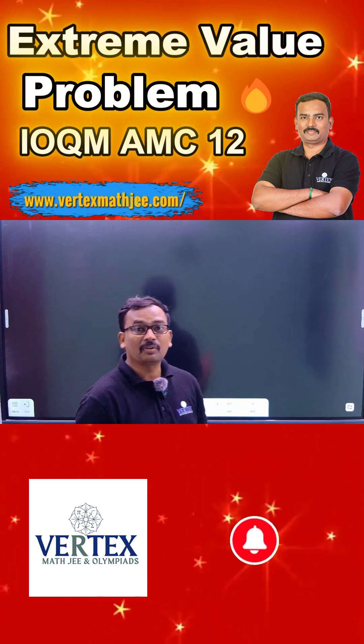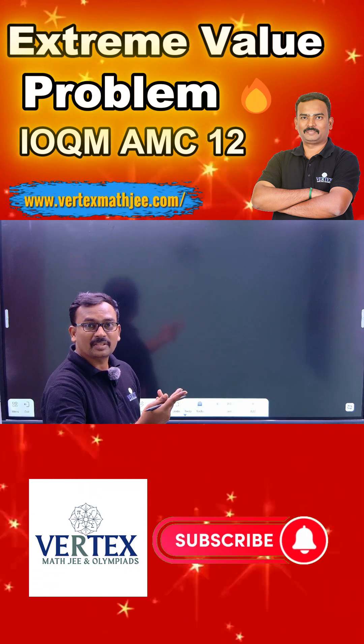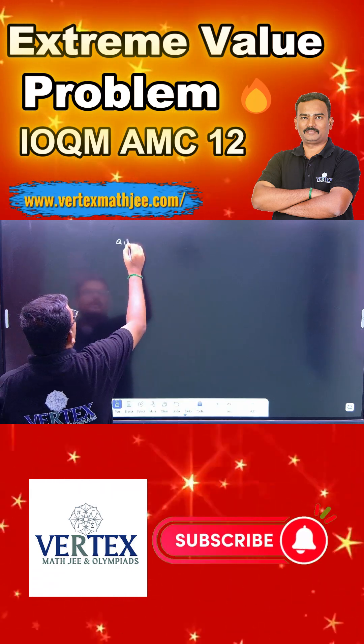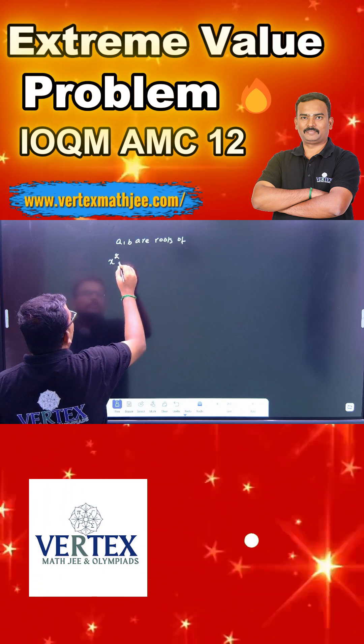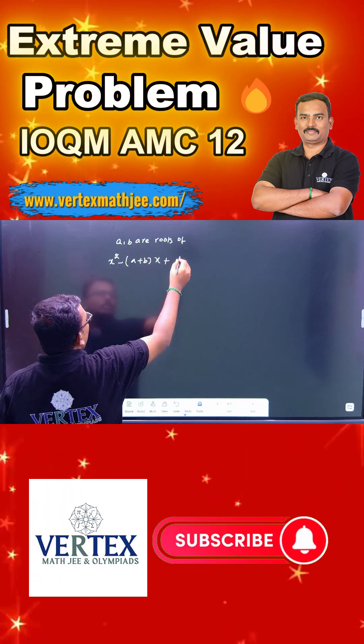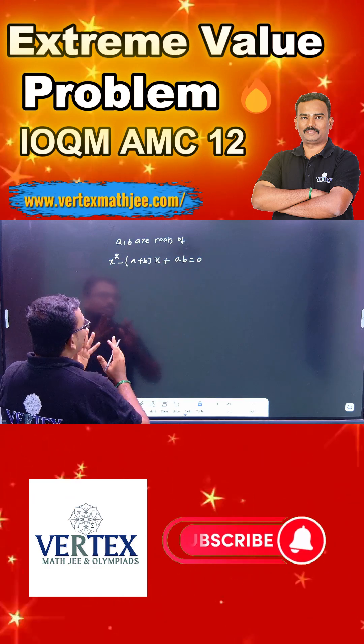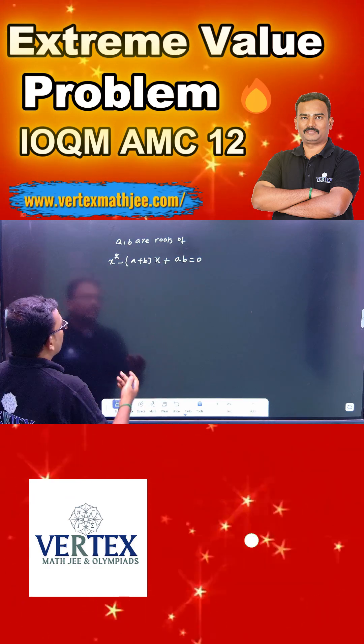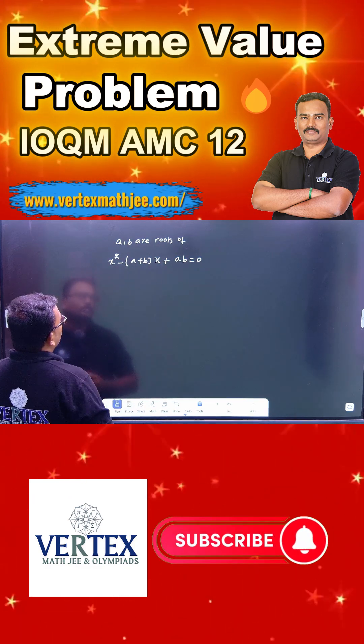But these are the roots for the quadratic equation because sum of the roots is there, product of the roots is there. That means a, b are roots of the quadratic equation x squared minus sum of the roots x plus the product of the roots equals 0. But you know that this quadratic equation has real solutions. a, b and c are real numbers.